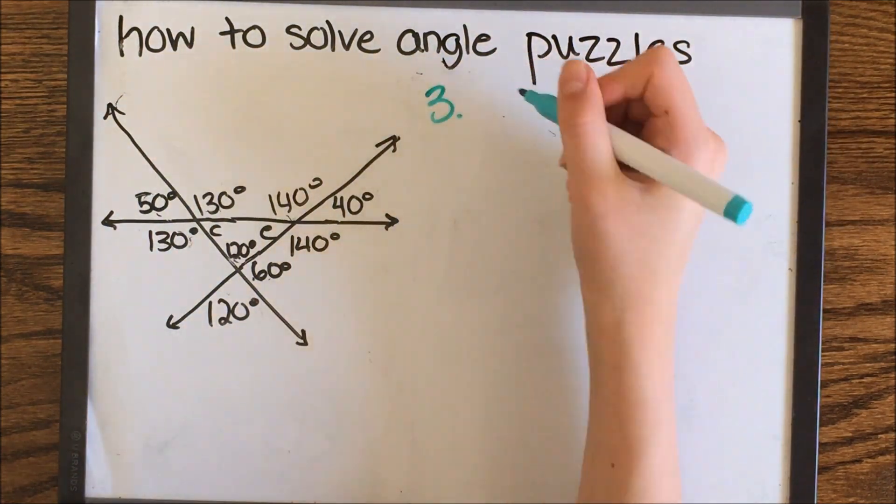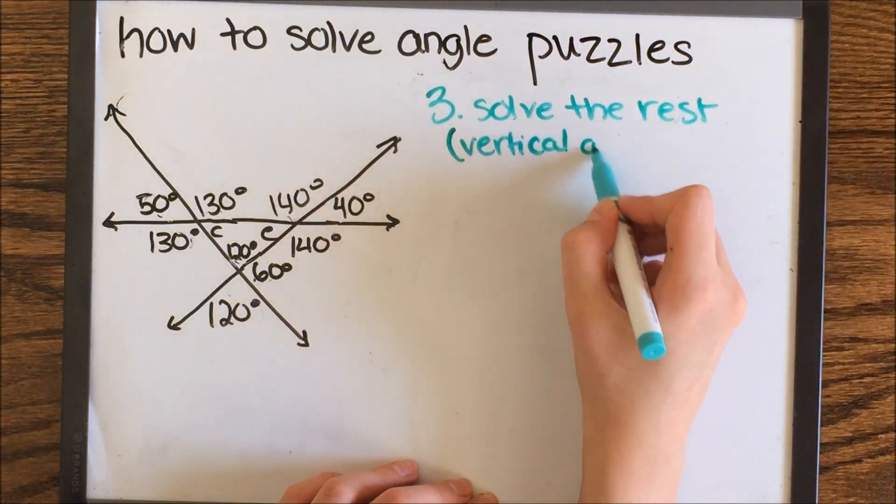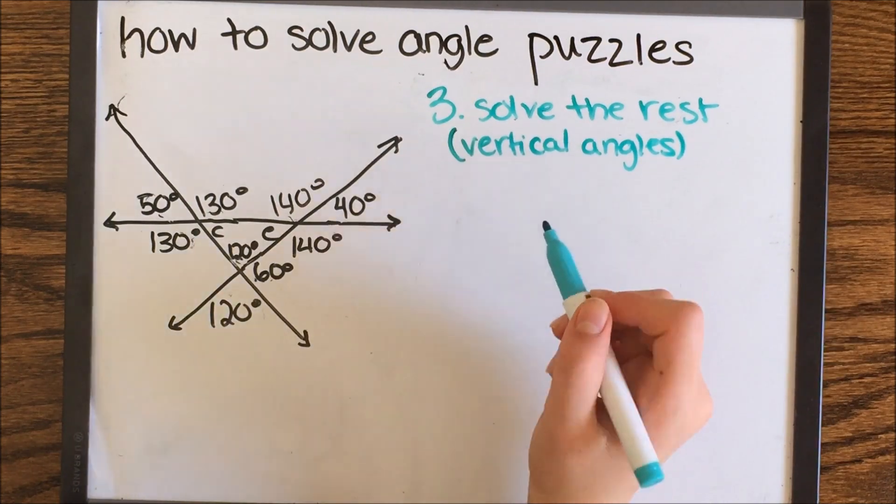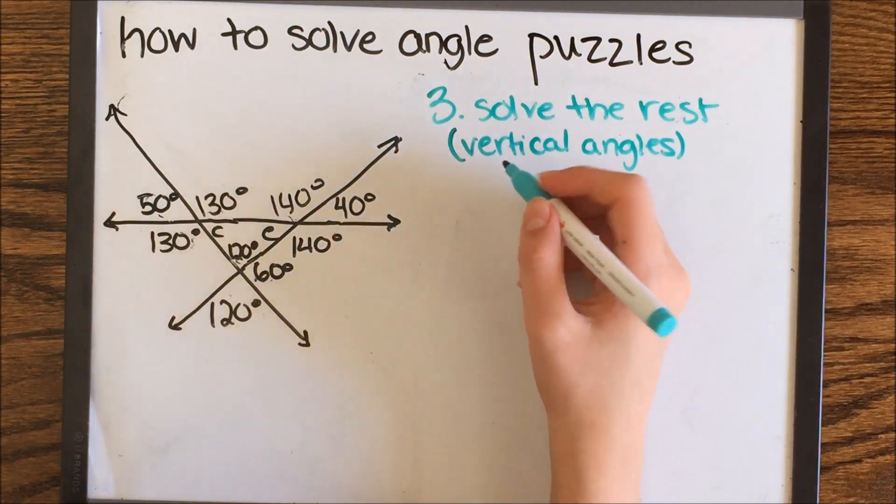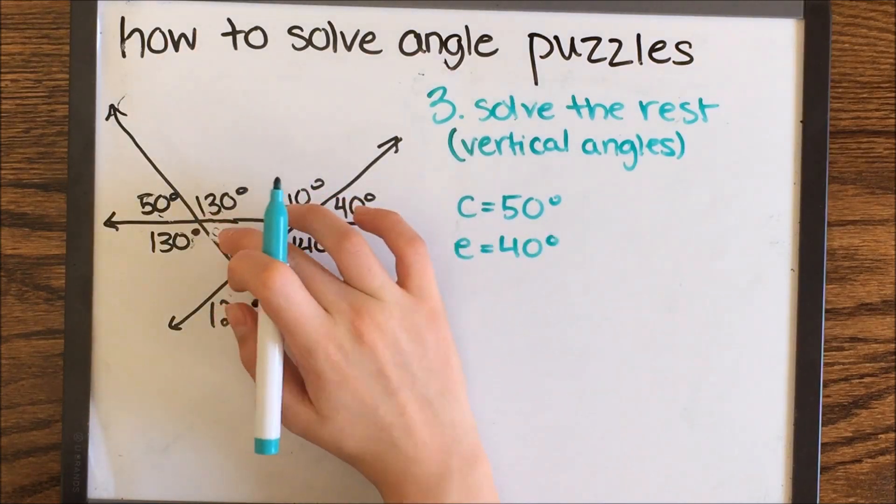The third step is to solve the rest of the angles, which are probably going to be vertical angles. Basically, they're going to be pretty easy. You just take the angles you already know and the vertical angles are just going to be the angles that you already know.